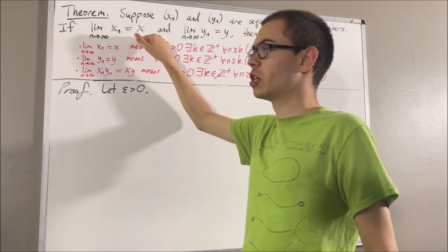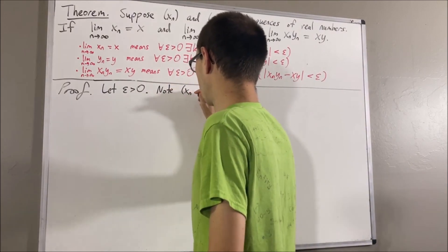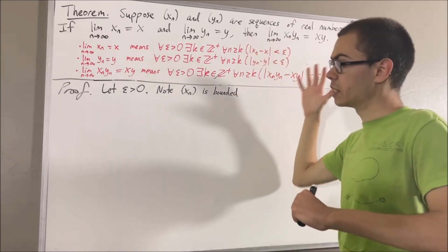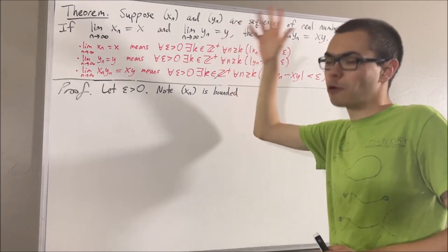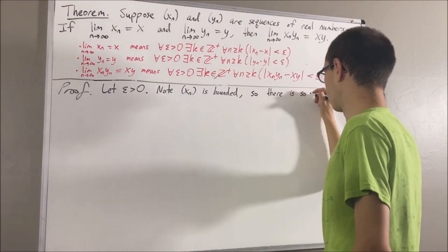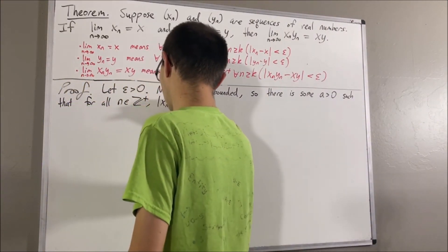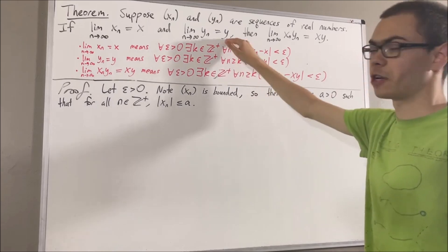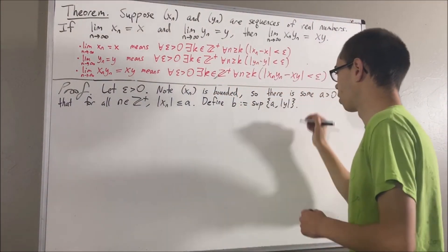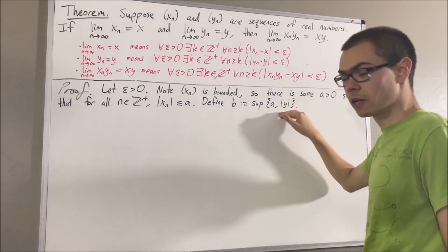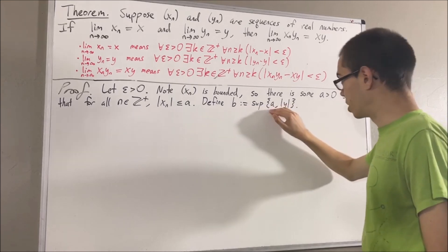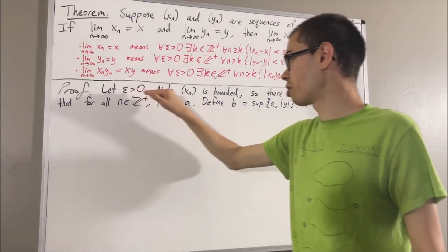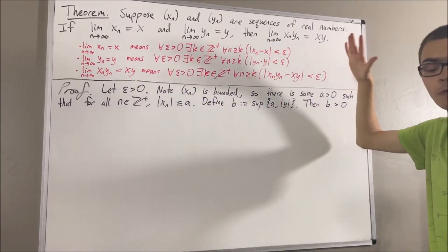Since xn is a convergent sequence, it follows that xn is a bounded sequence. What that means is there is some positive real number a such that the absolute value of xn is less than or equal to a for every positive integer n. Now let's define b to be the bigger of a and the absolute value of y. Since b is the bigger of these two numbers, we have that b is greater than or equal to a, which is greater than zero, so b must be greater than zero. Since epsilon is greater than zero and b is greater than zero, this tells us that epsilon over 2b is greater than zero.